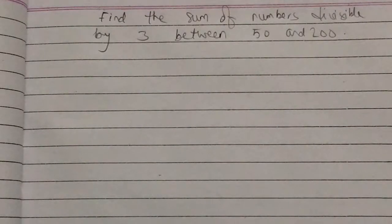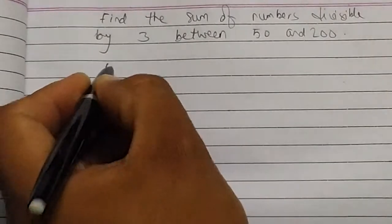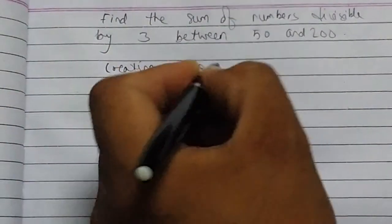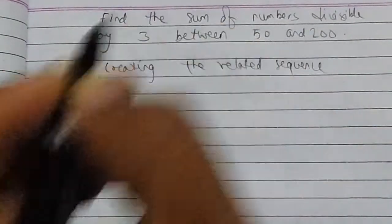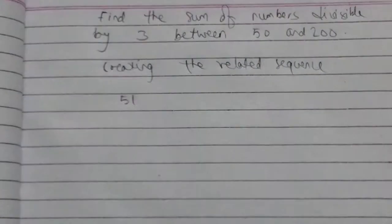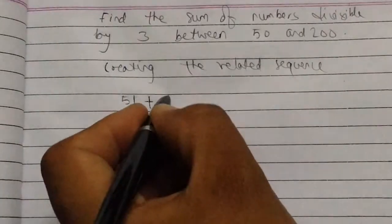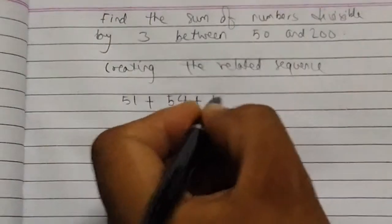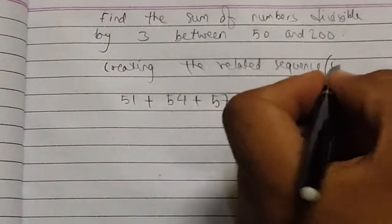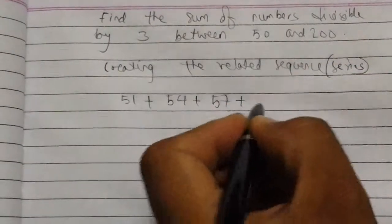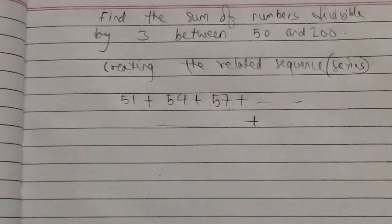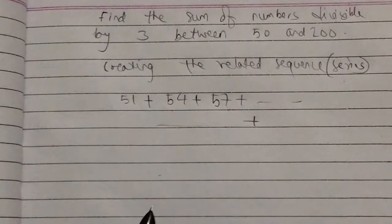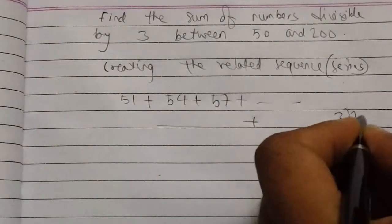Now when we have 17, we can find 17 times 3 is 51. So the first term is 51 because 3 divides into 51. So we're creating the related sequence. The first term is 51, then we have 54, then 57.